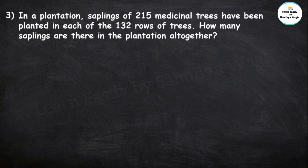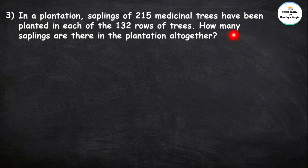Next question. In a plantation, saplings of 215 medicinal trees have been planted in each of the 132 rows of trees. How many saplings are there in the plantation altogether?